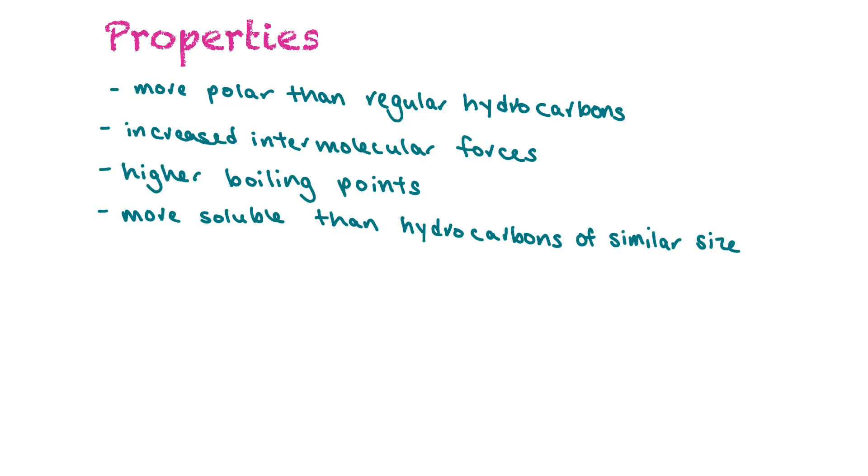So the properties of organic halides are that they're more polar than regular hydrocarbons because of the presence of the halogen. That means that they don't have symmetry as much now because there's that extra atom. And those atoms would be more electronegative than a hydrogen bonded to the carbon. So those bonds would be more polar, making the molecule more polar. This means that they have increased intermolecular forces and higher boiling points than hydrocarbons. And they're more soluble than hydrocarbons of similar size.